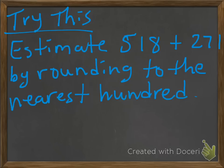All right. How did you do? So, again, we're going to estimate. We're going to round. 518 plus 271 by rounding to the nearest hundreds. So, we can take 518 and 271. And, again, we're going to be adding them.